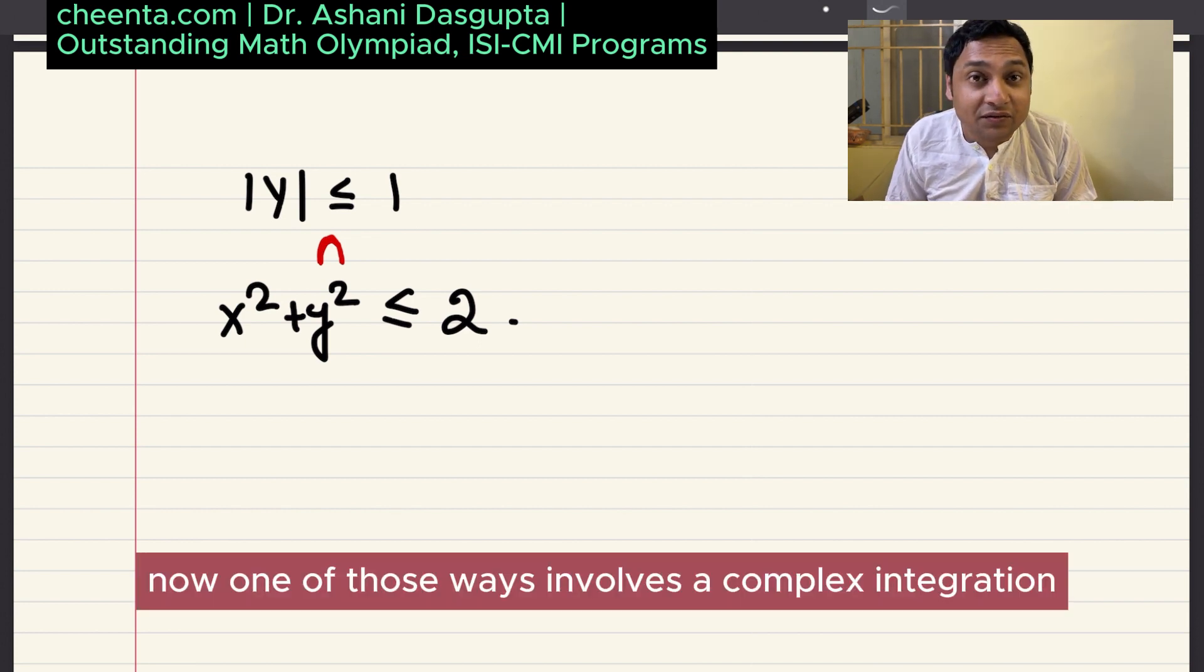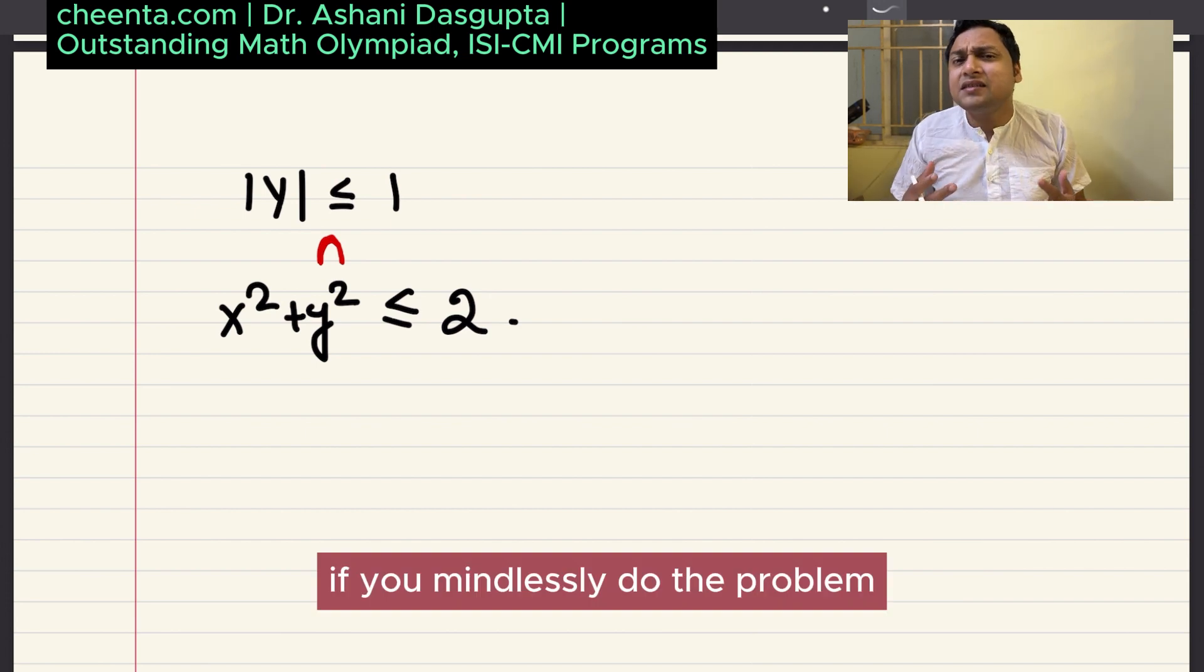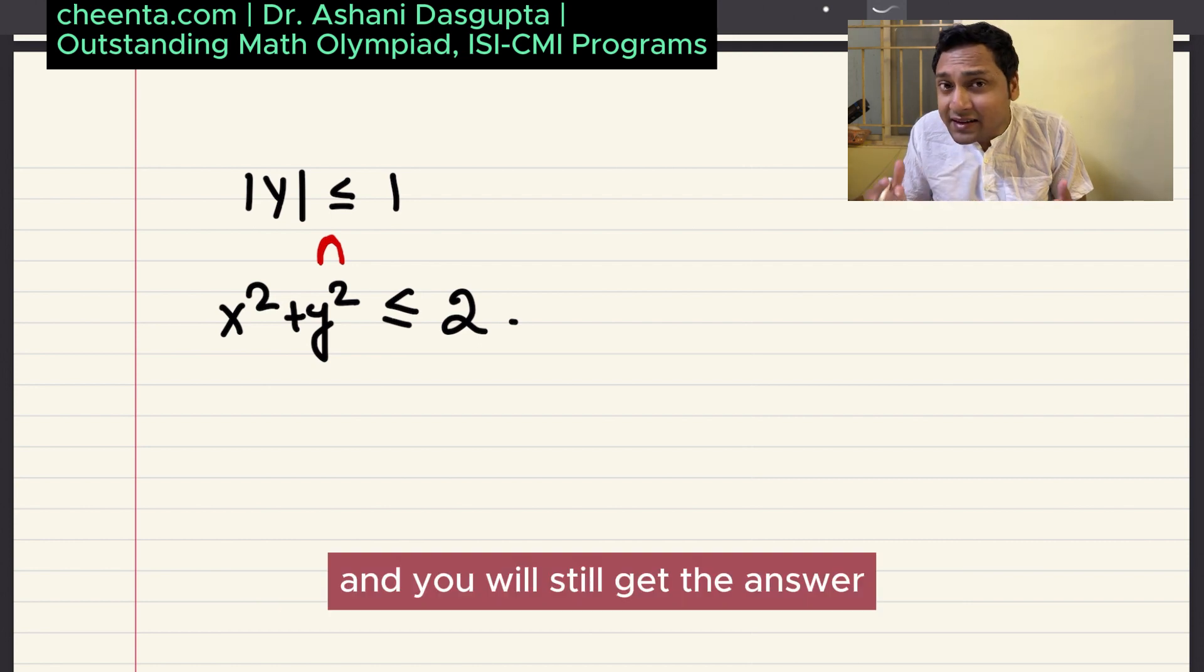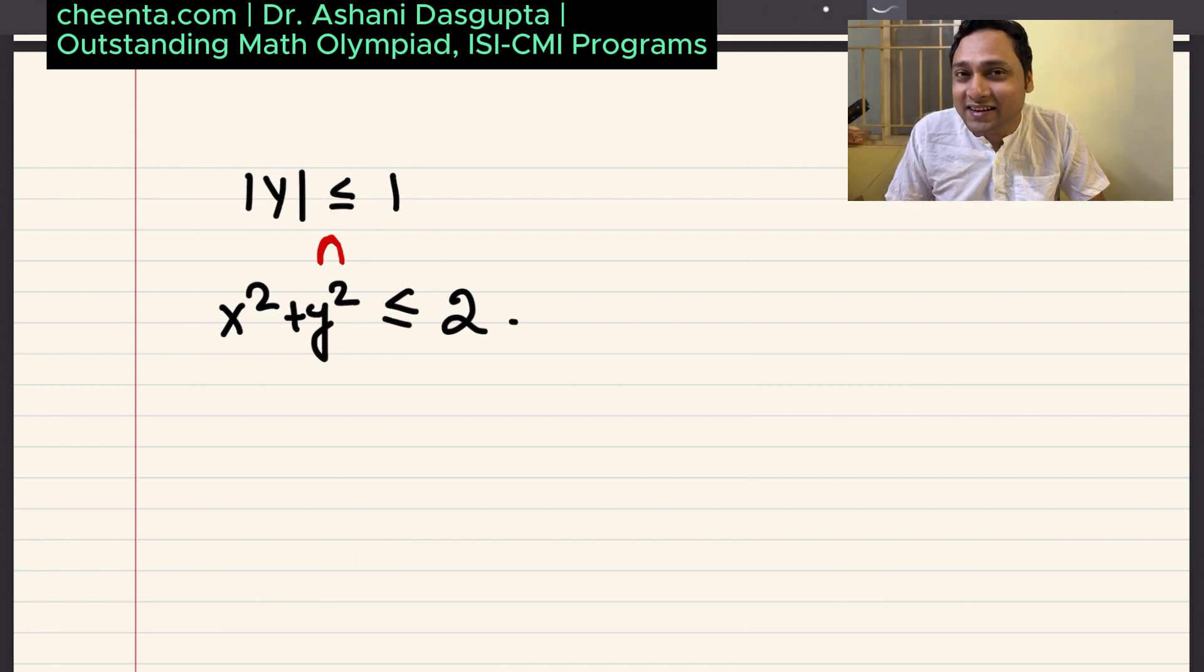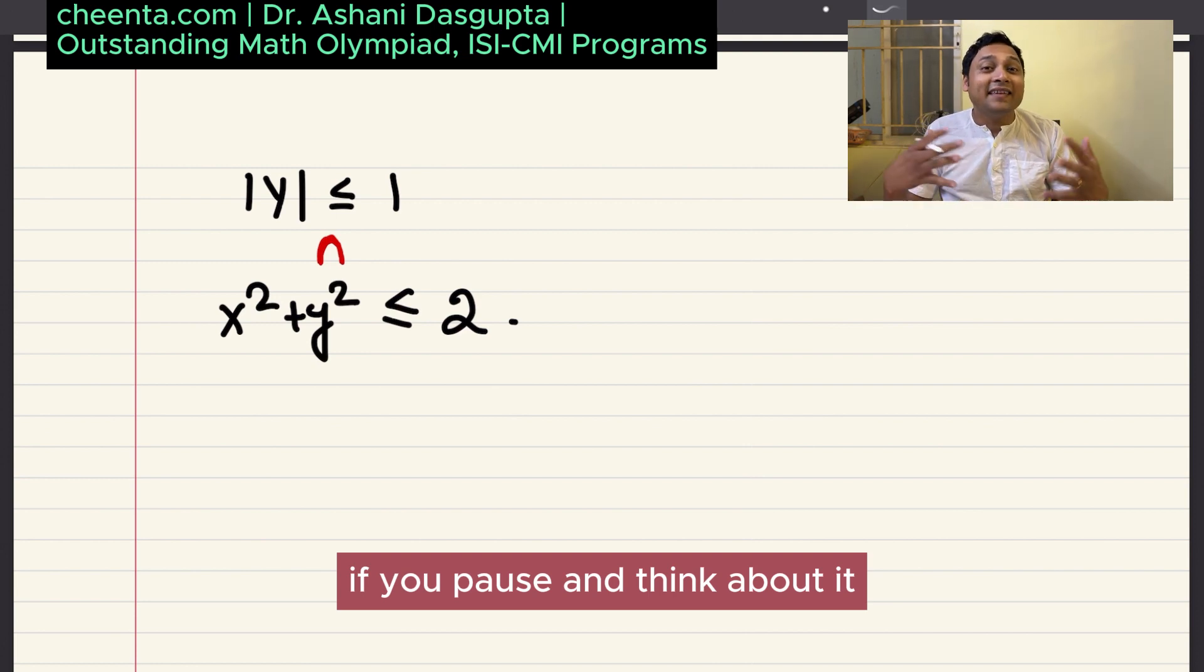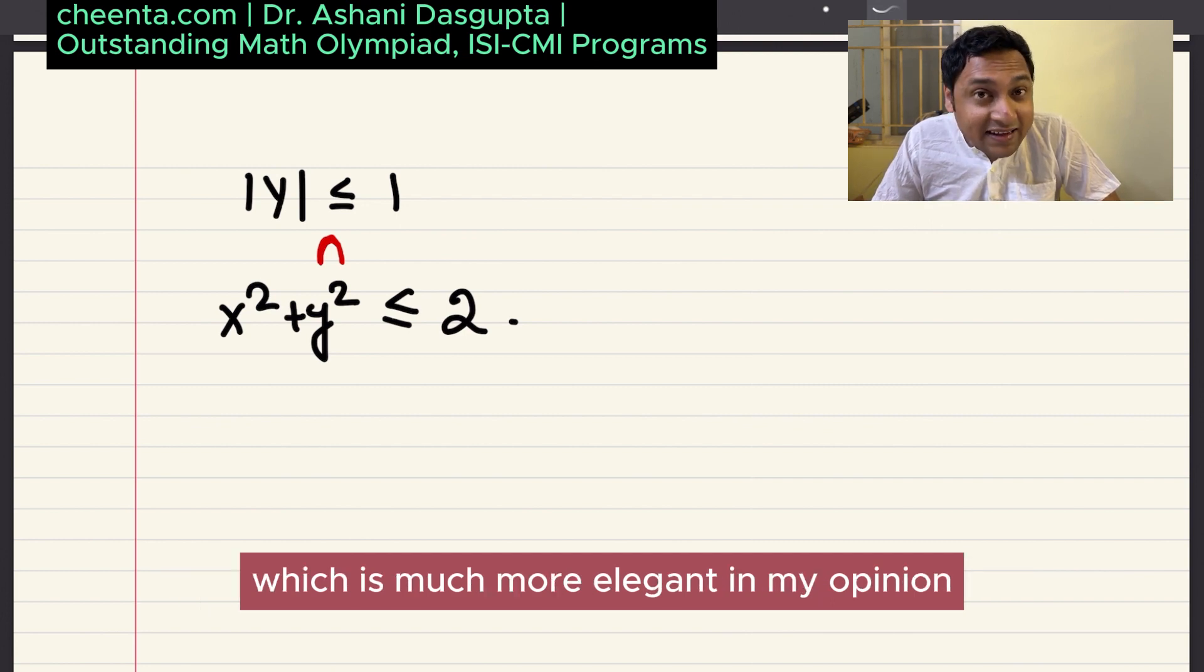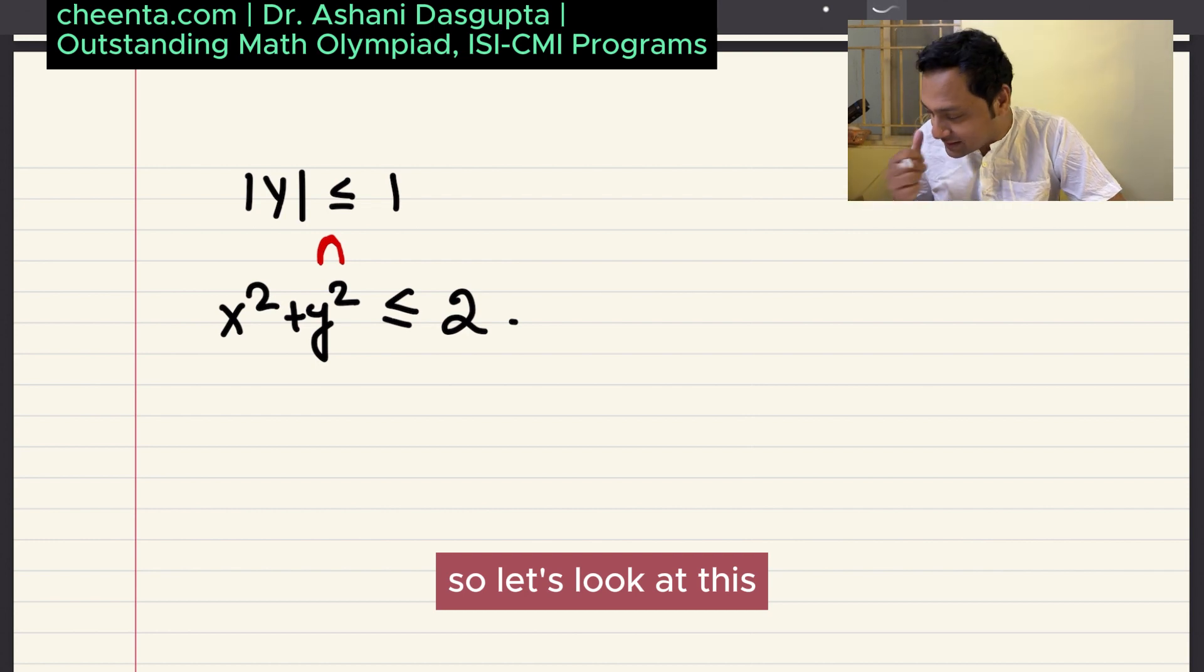One of those ways involves a complex integration. The other one just uses geometry. If you mindlessly do the problem, then you can use the integration method and you will still get the answer. But if you be a little bit lazy, if you pause and think about it, then you will quickly discover this second method, which is much more elegant in my opinion. So let's look at this.